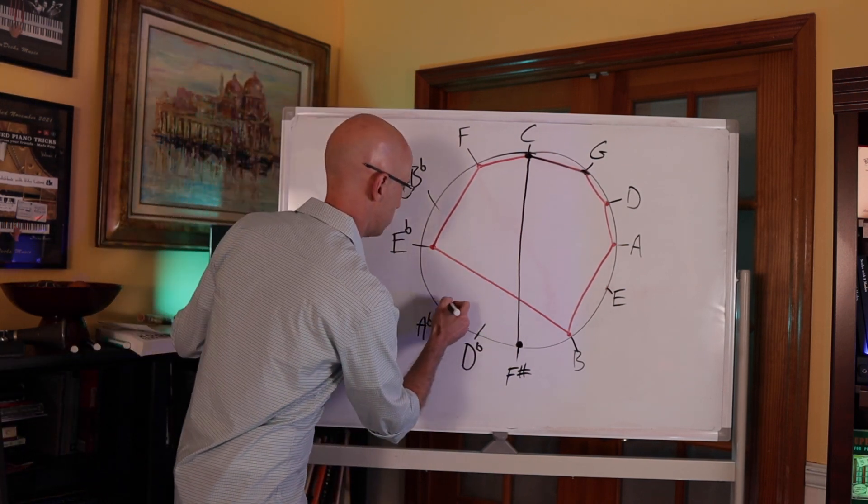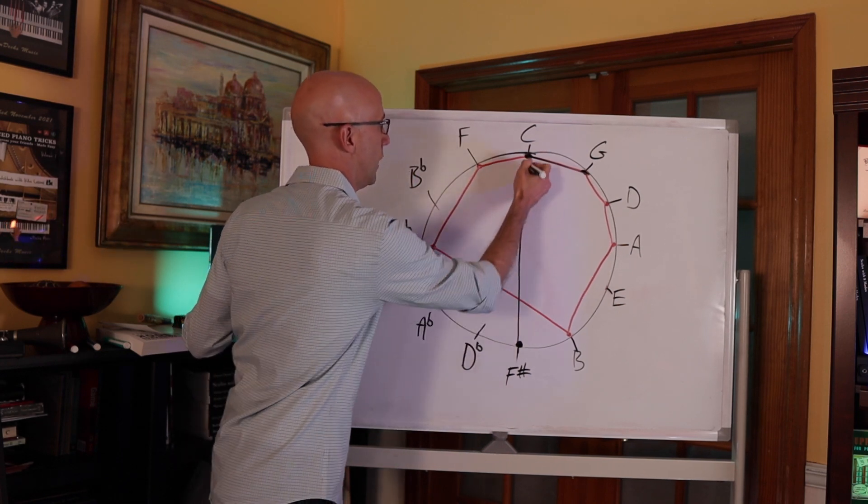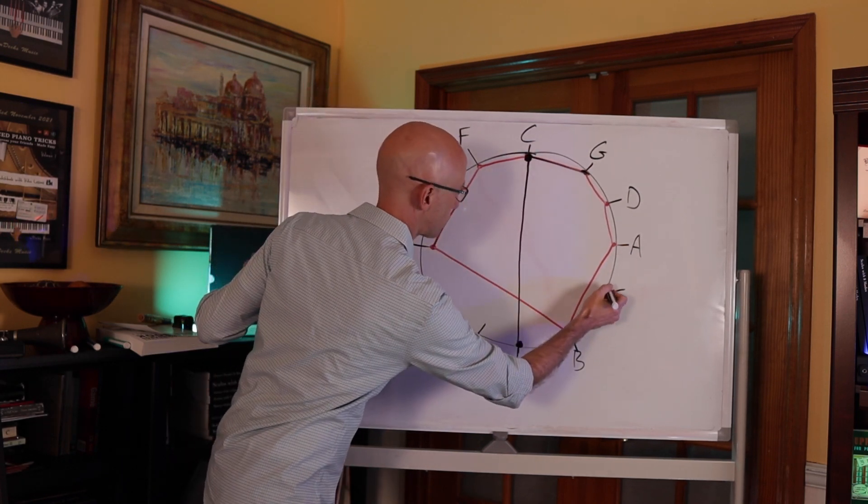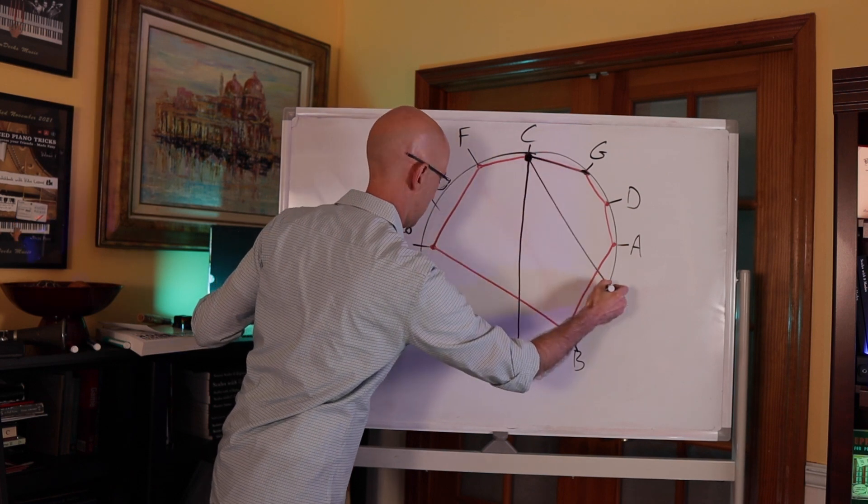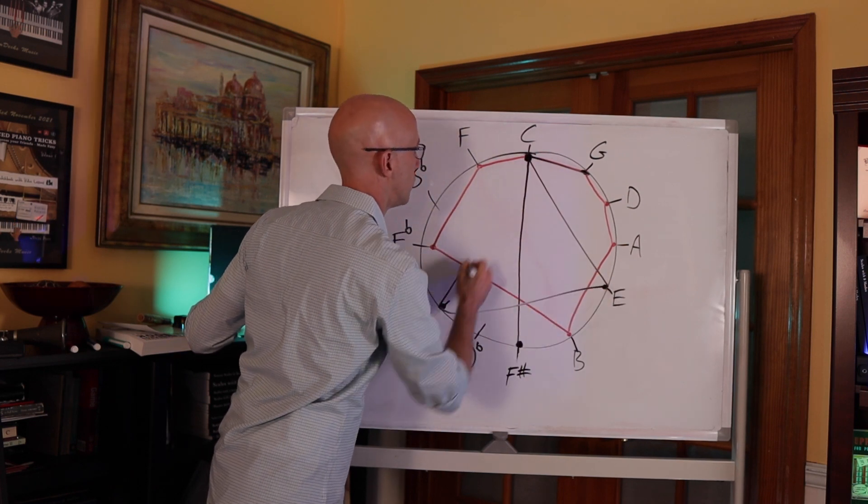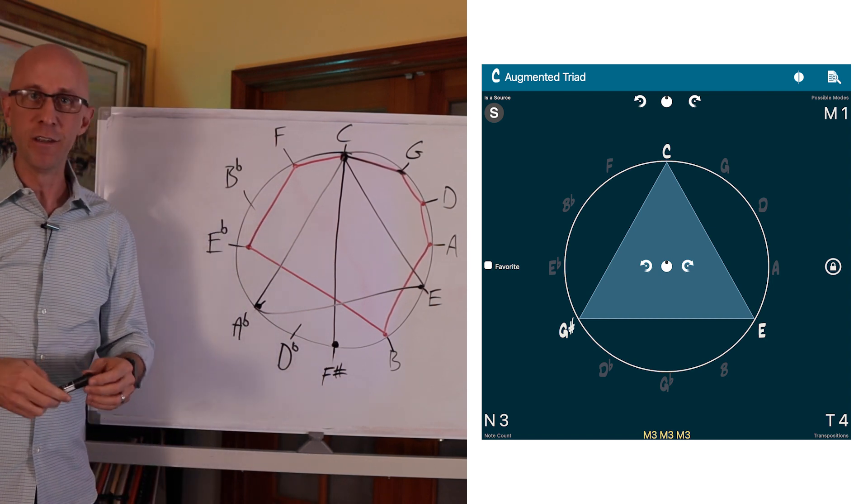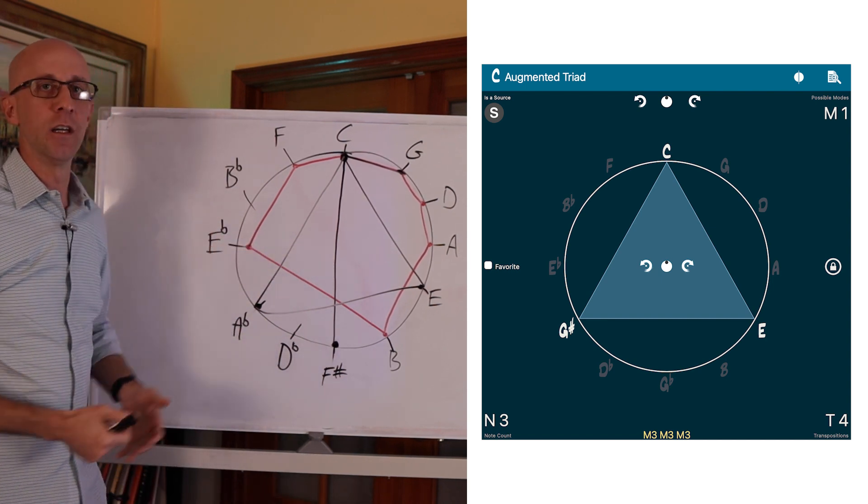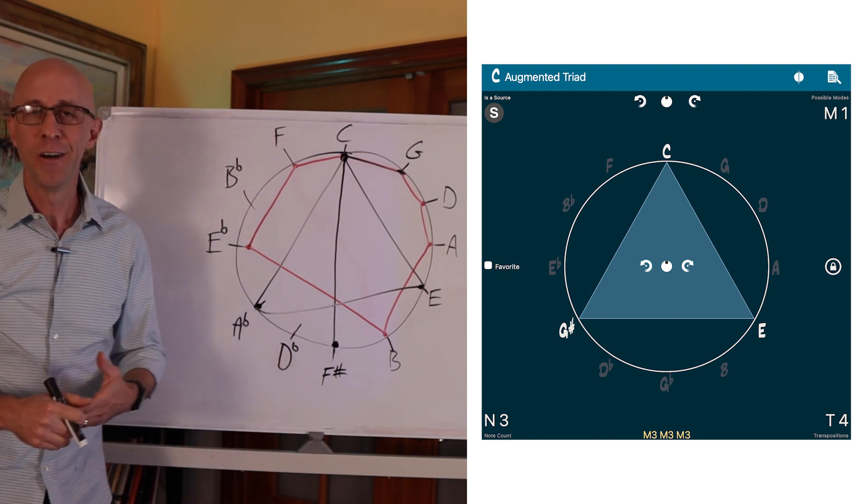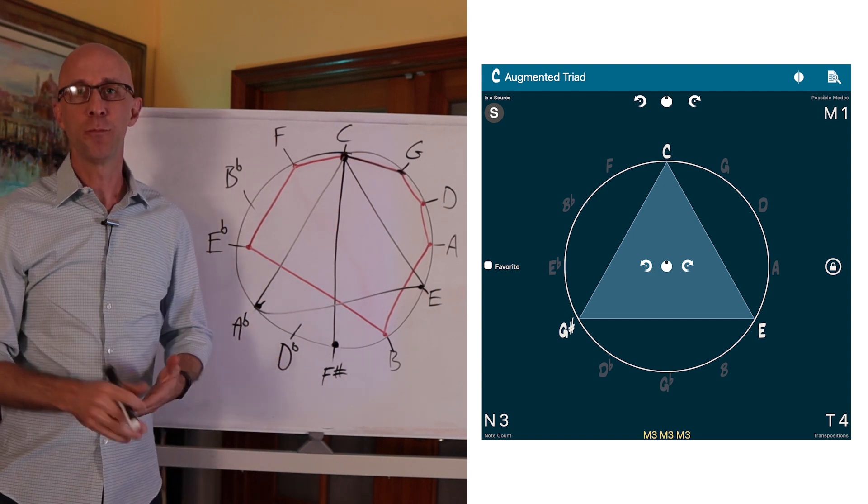What if we had an augmented triad? That's a good one because it just creates a nice symmetrical shape, a triangle. And that really reinforces the idea of symmetry in our scales. When you see them graphed over the circle of fifths, all these properties get exposed to us.